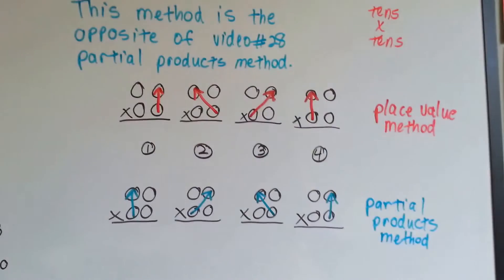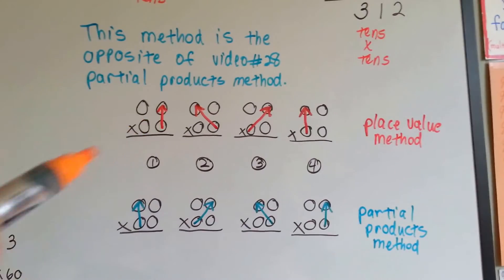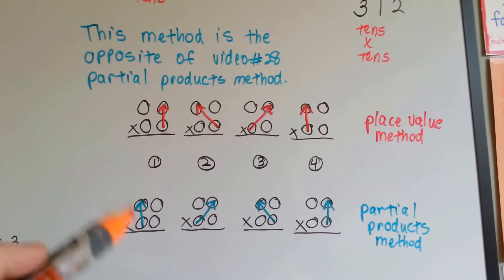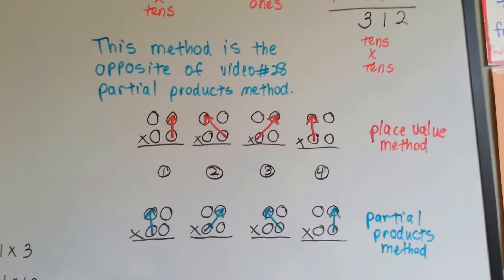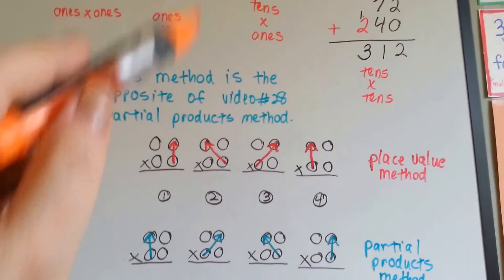This is the partial products, and this is the place value way that we just did. This way right here is this way we just did it.